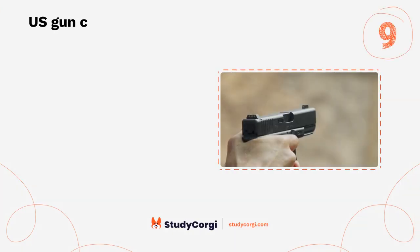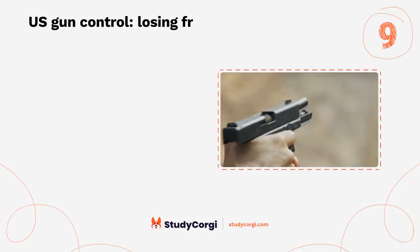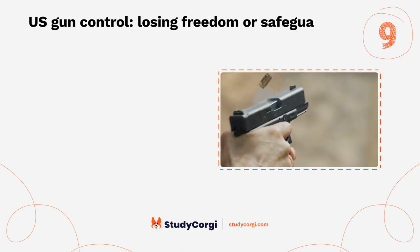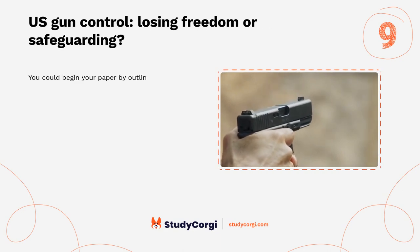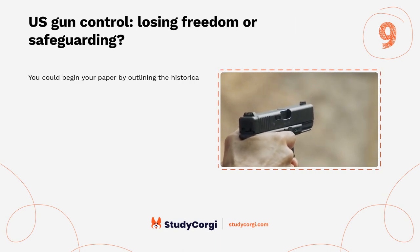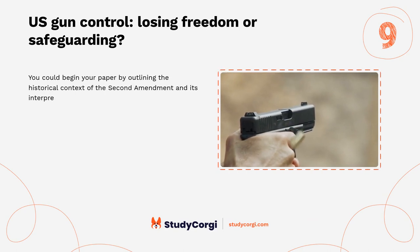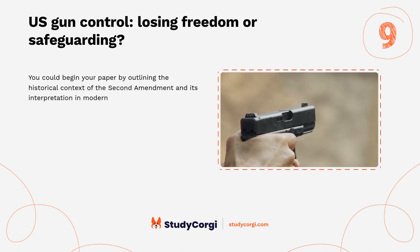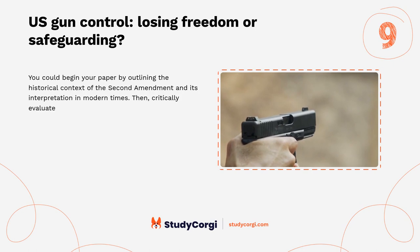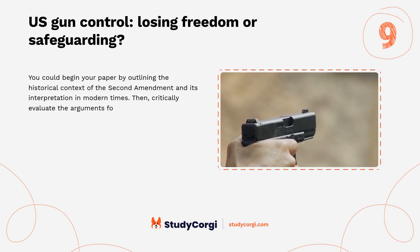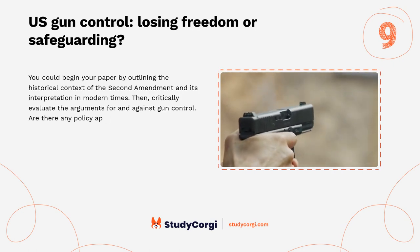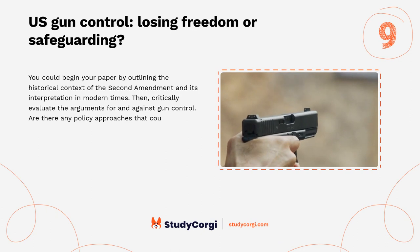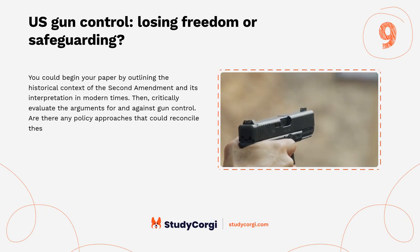U.S. gun control — losing freedom or safeguarding? You could begin your paper by outlining the historical context of the Second Amendment and its interpretation in modern times. Then critically evaluate the arguments for and against gun control. Are there any policy approaches that could reconcile these two perspectives?